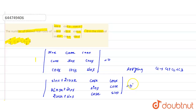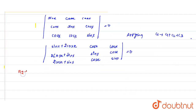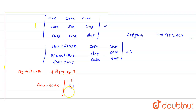Now applying the second condition: R2 → R2 minus R1 and R3 → R3 minus R1. So we have sin x + 2cos x as a common factor. The matrix becomes: 1, 0, 0 / cos x, sin x minus cos x, 0 / cos x, 0, sin x minus cos x.